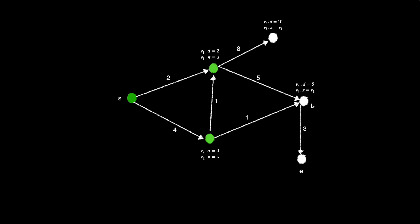From the min-heap we extract v4.d = 5 and relax its edges. The edge to the end vertex E with weight 3 gives 5 + 3 = 8, with predecessor v4. These are the final values: v1.d = 2 (predecessor S), v4.d = 5 (predecessor v2, predecessor of v2 is S), giving path S → v2 → v4 with cost 4 + 1 = 5.